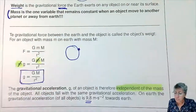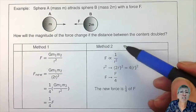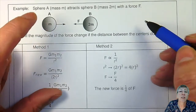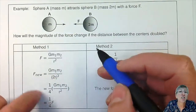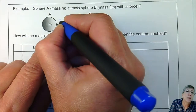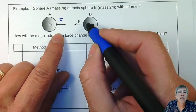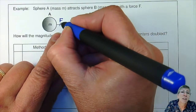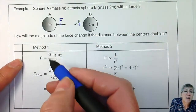Now let's see how we can manipulate that equation. A lot of times they give you questions like this, where they tell you A and B attract each other with a force F. This one has mass M, that one has mass 2M. How big will that attraction be? It will also be F — remember, this is Newton 3. If A attracts B, B will attract A with the same force.